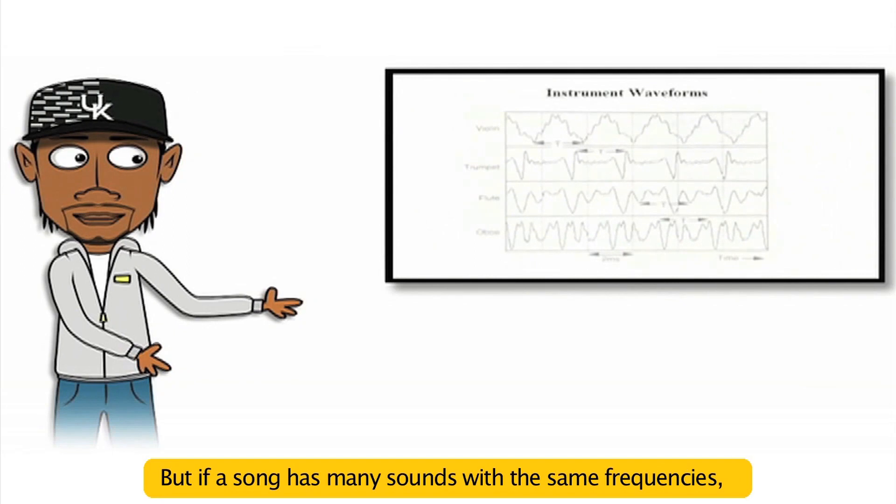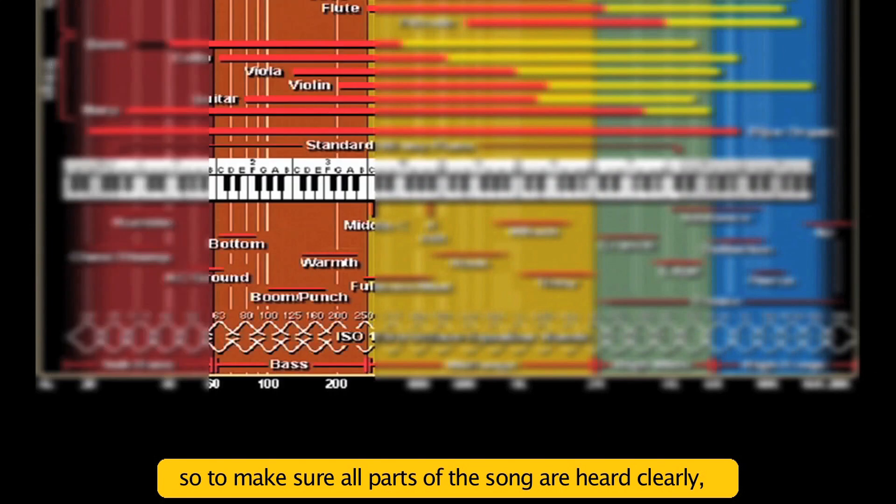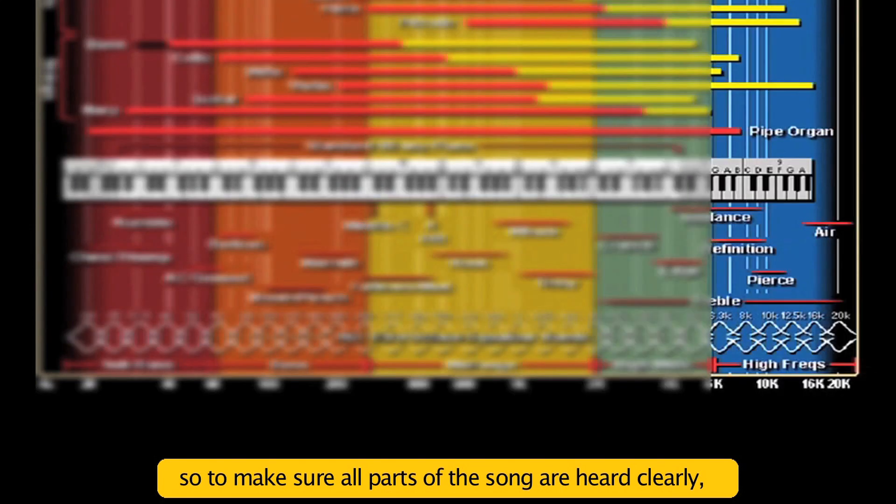But if a song has many sounds with the same frequencies, the frequencies can clash and overcrowd the song severely. So to make sure all parts of the song are heard clearly, equalization helps to distribute them fairly.